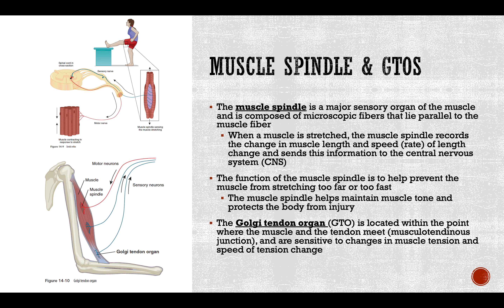Two key proprioceptors help us work correctly: muscle spindles and Golgi tendon organs. The muscle spindle is found in the muscle and detects stretch, length, or speed of length change. If you stretch someone's hamstring, as you reach that certain point the muscle spindle kicks back — the muscle is essentially saying 'stop, don't go any farther.' That's where proper tone comes in.